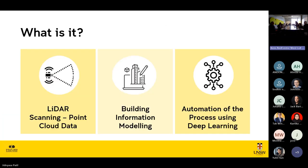So what is scan-to-BIM? We usually use a laser scanner or a LiDAR scanner to scan a room, and we collect point cloud data with XYZ and RGB features. This is like millions of data points. To convert this LiDAR scan point cloud data into a building information model, this process is called scan-to-BIM.